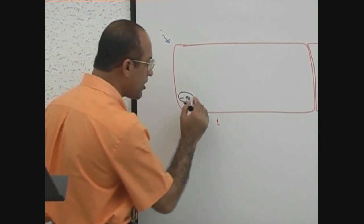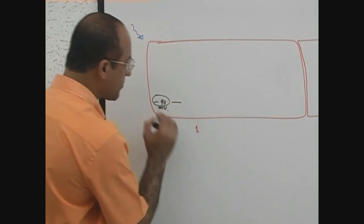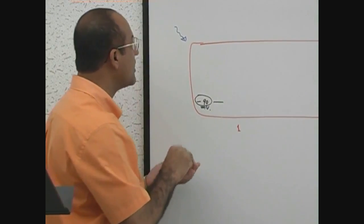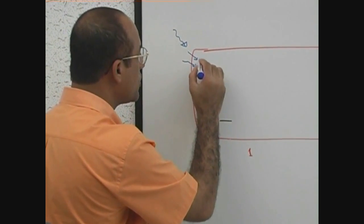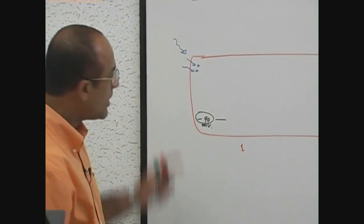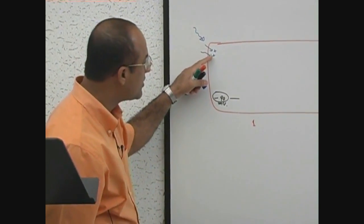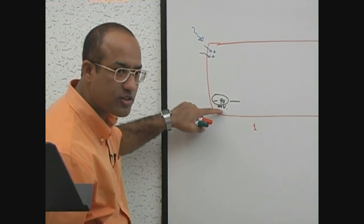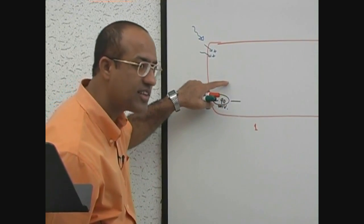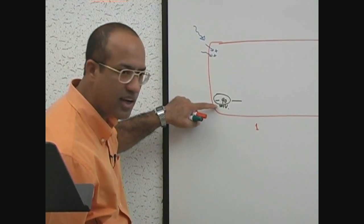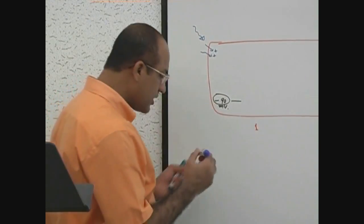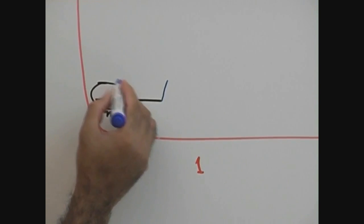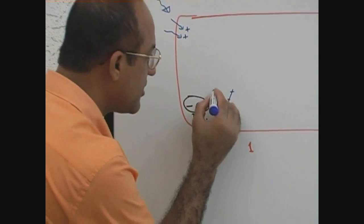Resting membrane potential is minus 90 millivolts. If we stimulate the cell, some cations — positive charges — will come in. Let's suppose we bring some sodium or calcium ions in. These electropositive ions entering the cell after stimulation will take the resting membrane potential towards a less negative value, because the positive charges neutralize the electronegativity. So resting membrane potential becomes less negative — for example, minus 80 and then minus 70 millivolts.